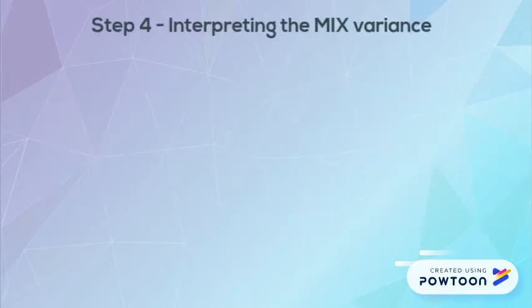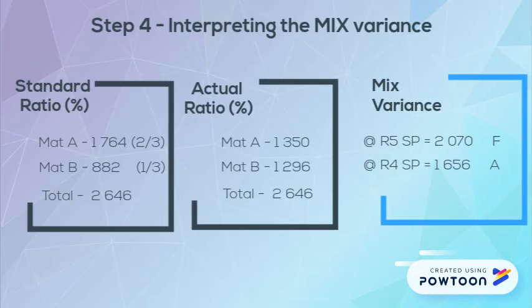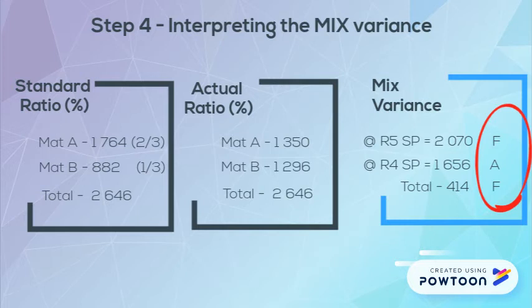The next step is deciding the direction of the variances. For material A, our actual usage was 1350, whereas with the standard ratio we should have used 1760. This is therefore a favourable variance as we used less. For material B it is the exact same logic, but we used more than we should have used, making it adverse.